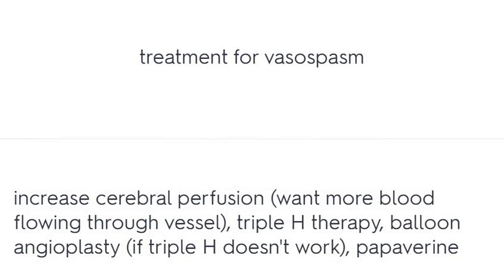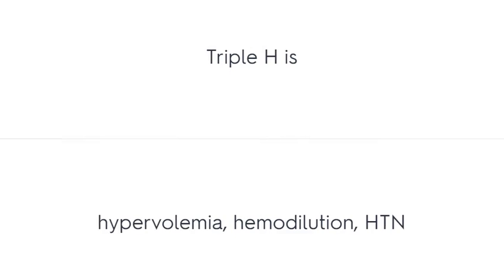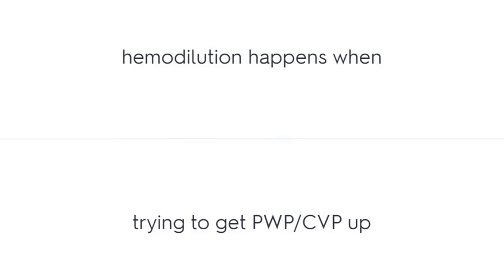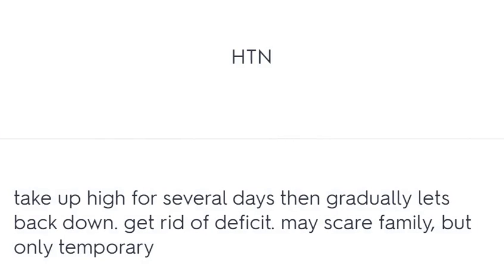Treatment for vasospasm includes Triple H therapy, balloon angioplasty, and Papaverine to increase cerebral perfusion. Triple H therapy is Hypervolemia, Hemodilution, and Hypertension. First line is hypervolemia, using CVP if no PA line to greater than 12. Hemodilution involves getting PCWP/CVP up. Hypertension is taken up high for several days then gradually brought back down — this may scare the family but is only temporary.